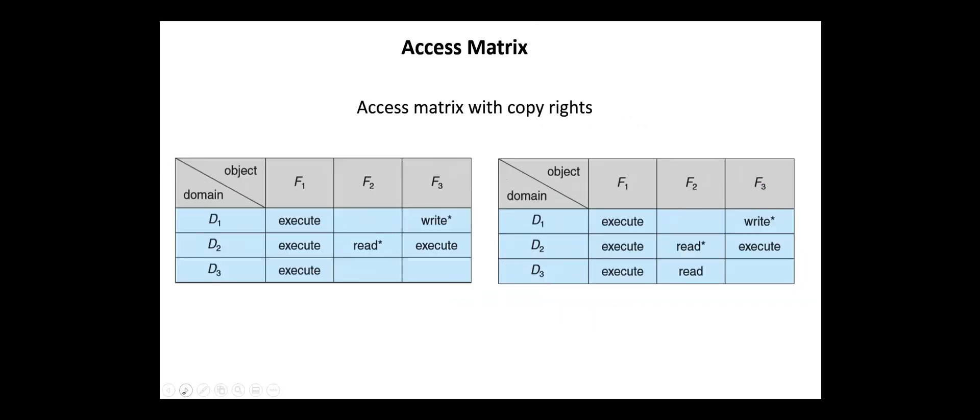Allowing control change in the contents of the access matrix entries requires three additional operations: copy, owner, and control. The ability to copy an access right from one domain or row of the access matrix to another is denoted by an asterisk appended to the access right. The copy right allows the access right to be copied only within the same column for which the right is defined.